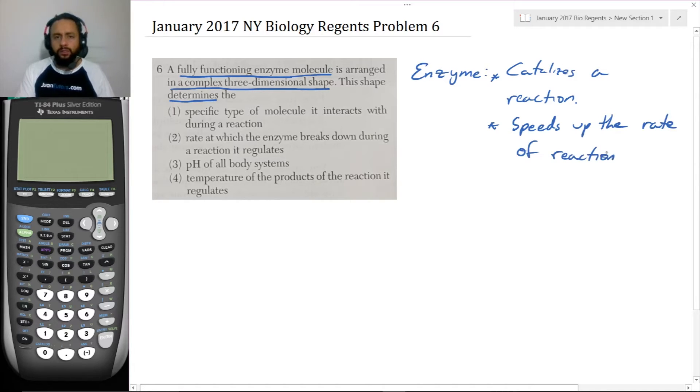So that's what it does. We know this is about the shape - the shape determines what? The specific type of molecule it interacts with during a reaction - that sounds like the shape might affect that. Now, the rate at which the enzyme breaks down during the reaction it regulates - let's establish something right now: the enzyme does not break down.